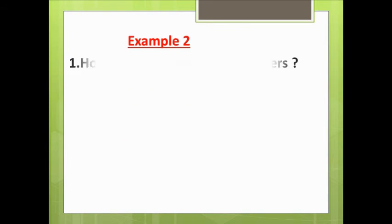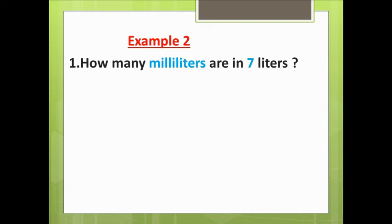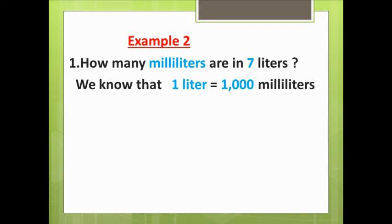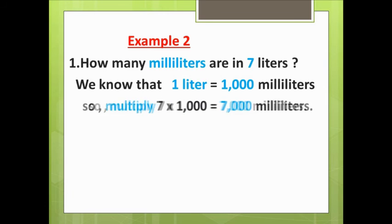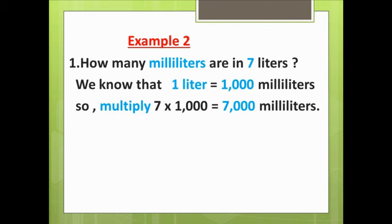Example two: how many milliliters are in seven liters? We know that one liter equals one thousand milliliters, so multiply seven times one thousand to get seven thousand milliliters.